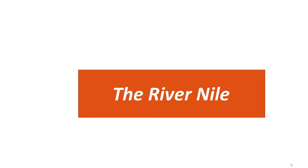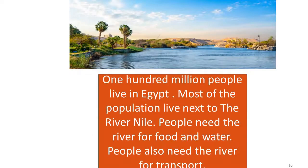The River Nile. One hundred million people live in Egypt. Most of the population live next to the River Nile. Population means the number of people. People need the river for food and water. People also need the river for transport. Transport means to travel from place to another.